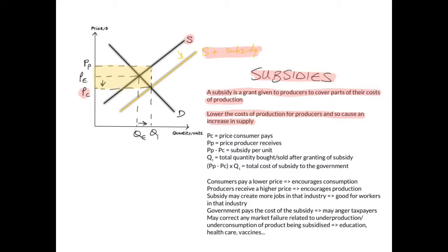In the subsidy diagram, PC is the price the consumer pays, while PP is the price the producer receives. The producer receives a higher price than what the consumer pays. PP minus PC is the subsidy per unit — the vertical distance between the two supply curves. Q1 is the total quantity bought and sold after granting the subsidy. PP minus PC (the subsidy per unit) multiplied by Q1 gives you the total cost of the subsidy to the government.